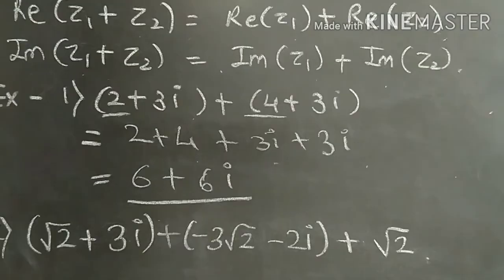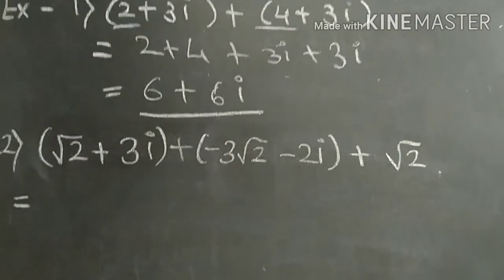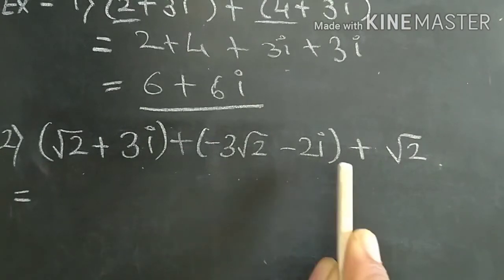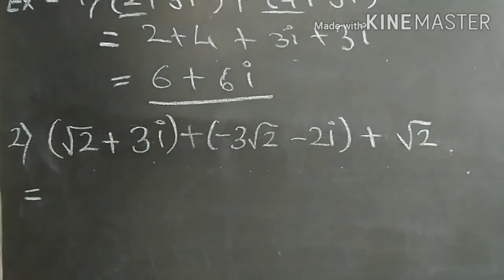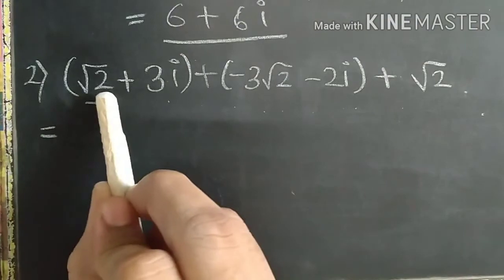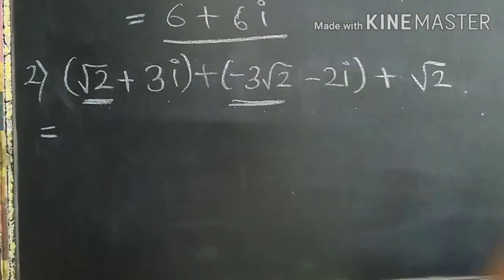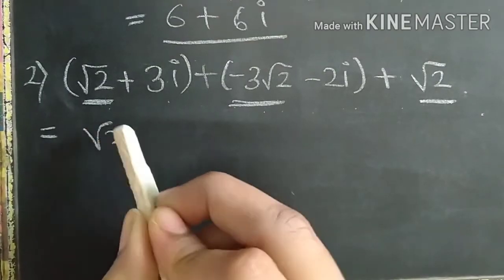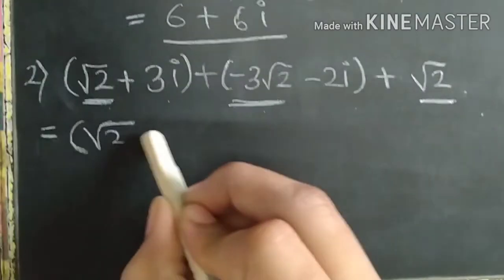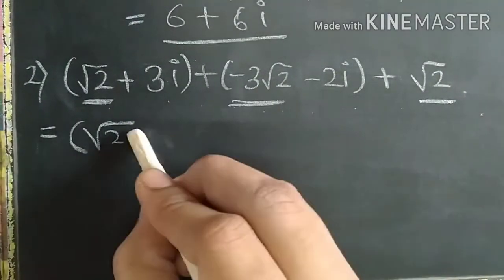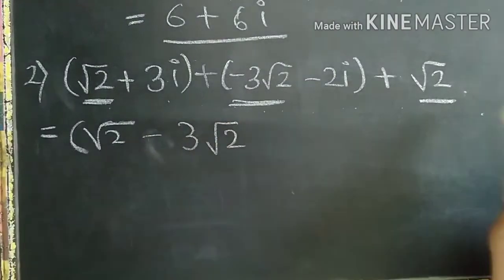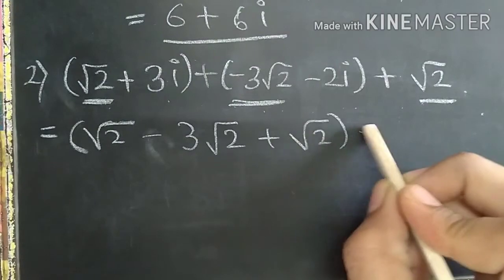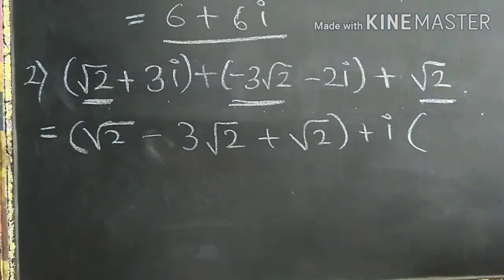Now the next example is: root 2 plus 3i, plus minus 3 root 2 minus 2i, plus root 2. In the first complex number, root 2 is the real part. In the second, minus 3 root 2 is the real part, and in the third, root 2 is the real part. We combine all real parts: root 2 plus minus 3 root 2 plus root 2. For imaginary parts, we take out the common factor I.